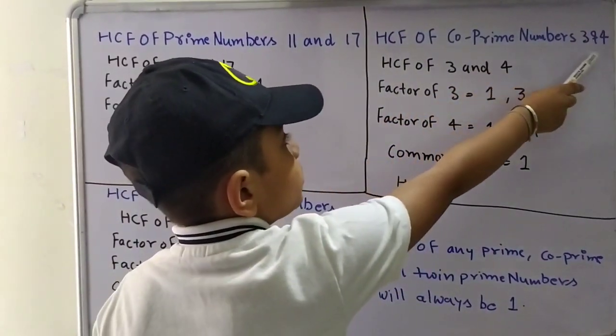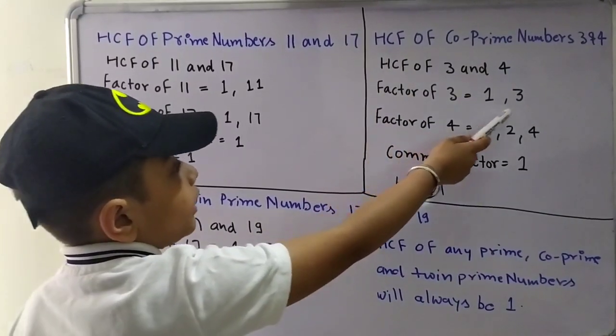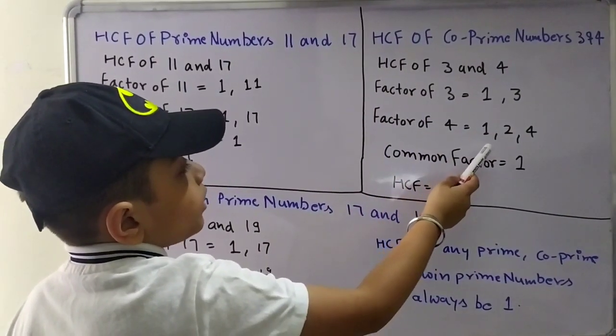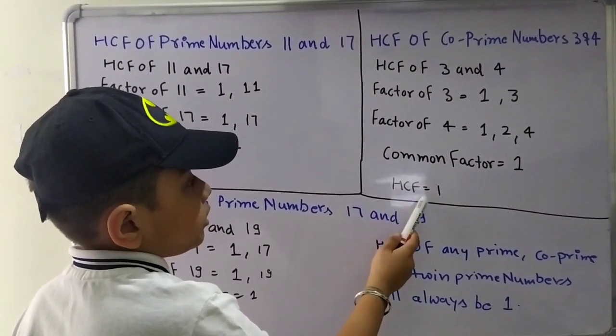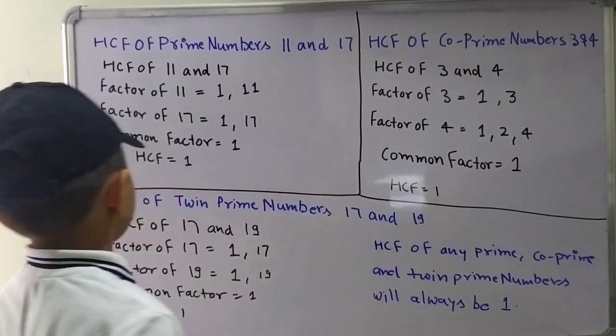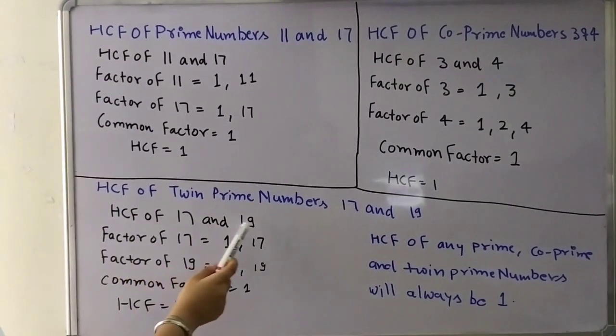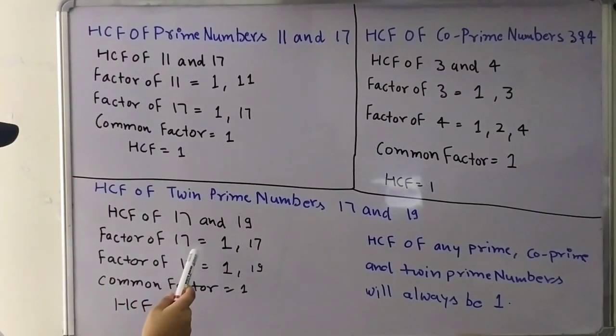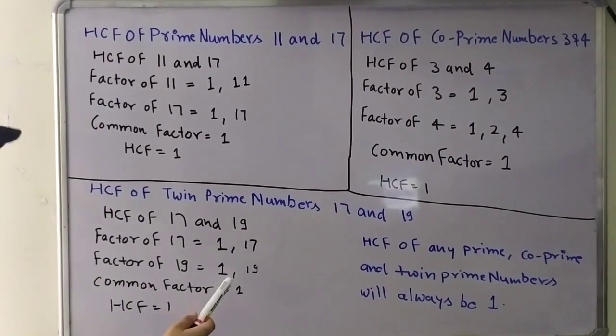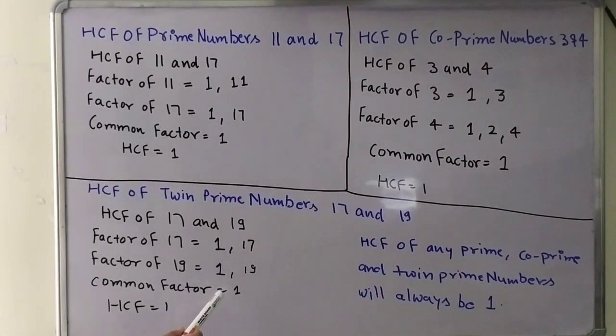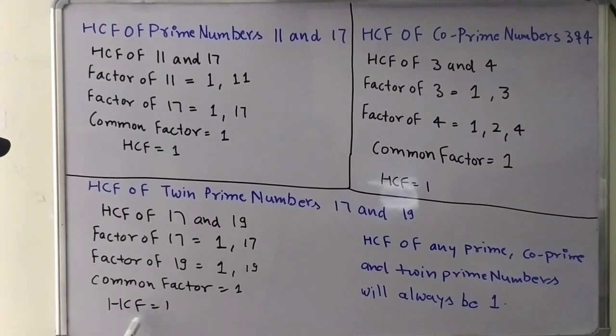HCF of twin prime numbers 17 and 19. HCF of 17 and 19. The highest common factor is 1.